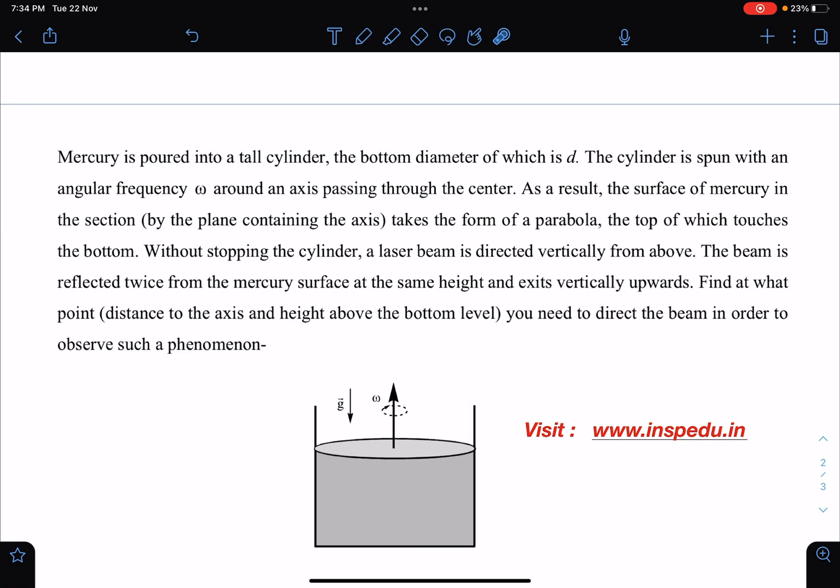The top of which touches the bottom. Without stopping the cylinder, a laser beam is directed. So laser beam is coming here. The beam is reflected twice from the mercury surface at the same height, and then it is exiting vertically upwards.